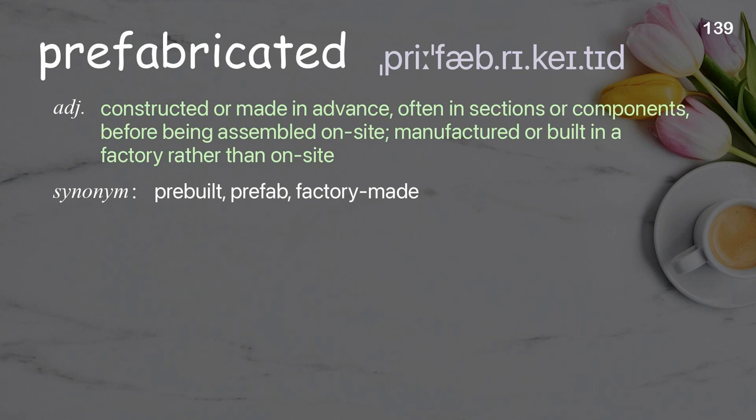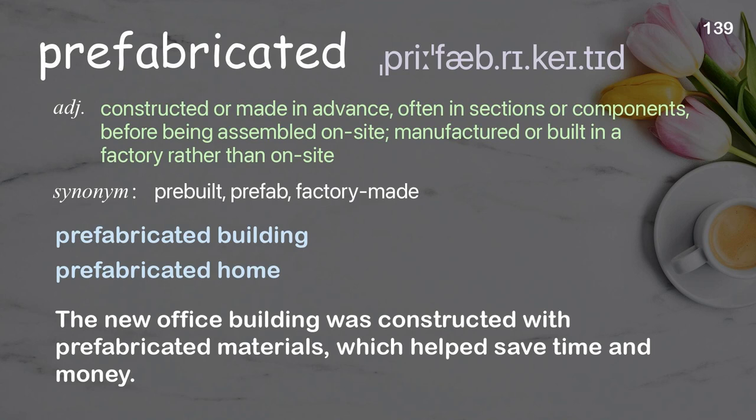Prefabricated: constructed or made in advance, often in sections or components, before being assembled on-site; manufactured or built in a factory rather than on-site. Examples: Prefabricated building. Prefabricated home. The new office building was constructed with prefabricated materials, which helped save time and money.